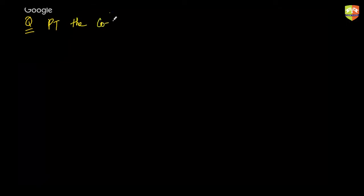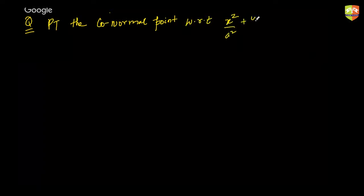The next question is: prove that the co-normal points with respect to the ellipse x²/a² + y²/b² = 1